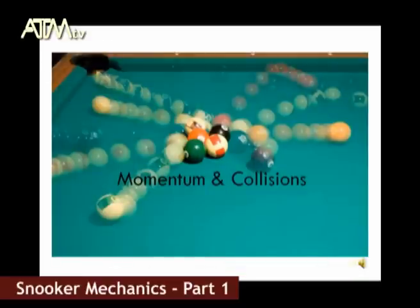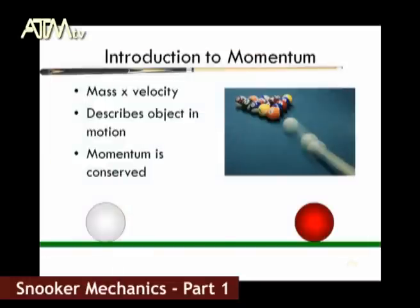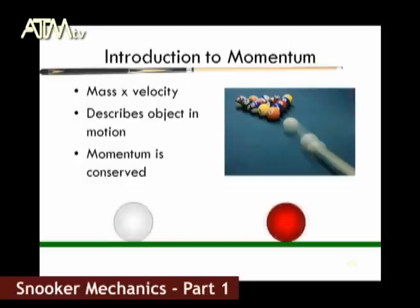Now we can look at momentum and collision. Momentum describes any object that is moving, and mathematically this is a product of its mass and velocity. One way of looking at it is that it is a measure of unstoppability — any object with high momentum is much harder to stop than an object with low momentum. In all cases, momentum is conserved, providing that no external forces act.